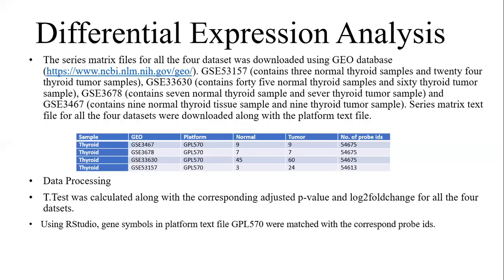For differentially expressed analysis, the series matrix files for all four datasets were downloaded using the GEO database and introduced to Excel. The t-test values were calculated along with the corresponding adjusted p-values and log fold change values for all four datasets. The values were filtered to find the number of upregulated genes. Using RStudio, gene symbols from platform file GPL570 were matched to the corresponding probe IDs. In the table, we can see the GEO session IDs of the four datasets along with the number of tumor samples, normal thyroid samples, tumor thyroid samples, and the number of probe IDs.